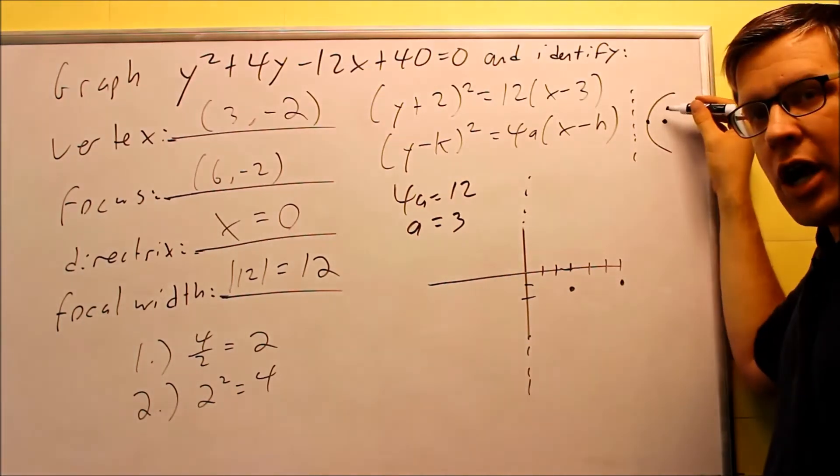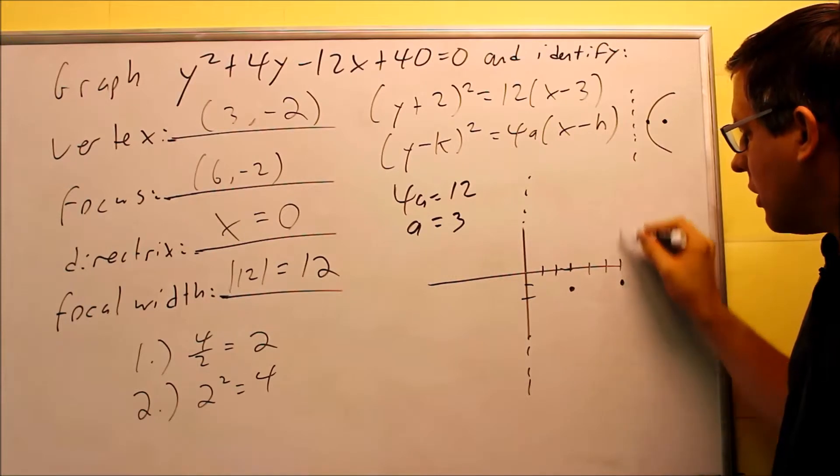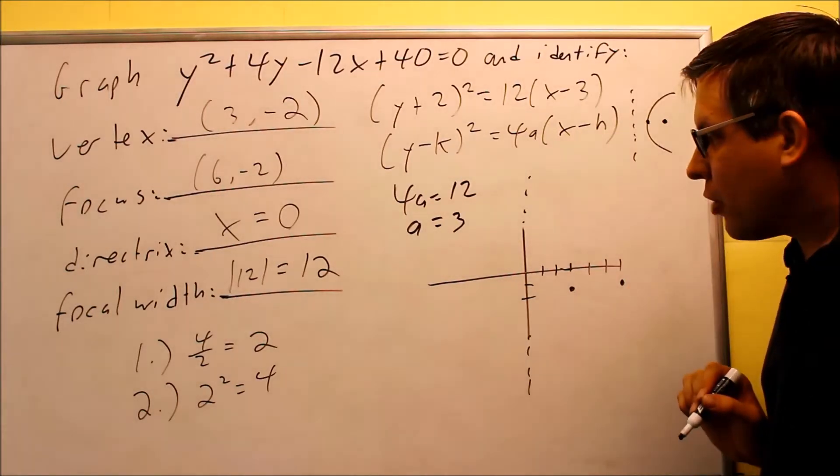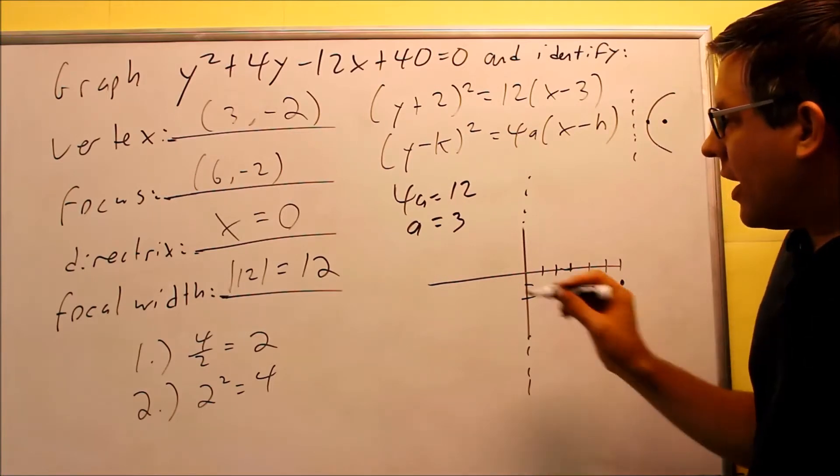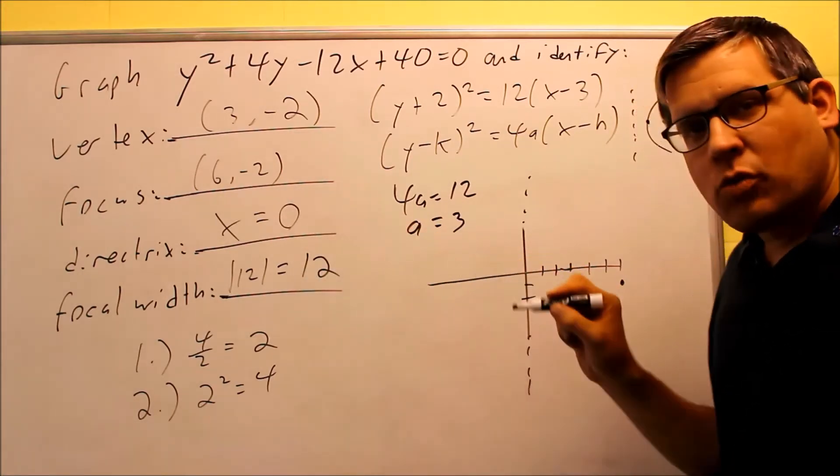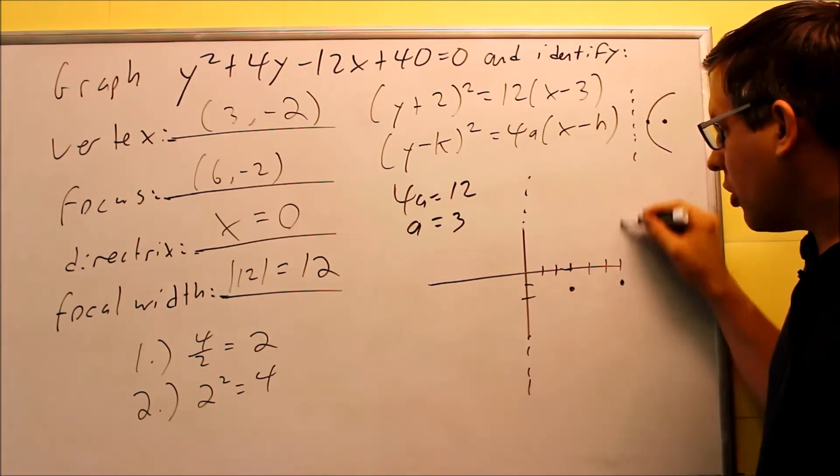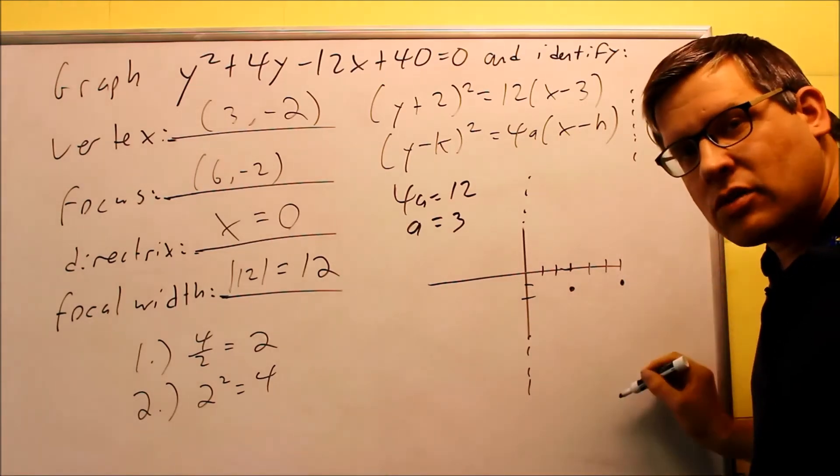The last thing I need to do is draw the graph. So again, at the focus, I need to find 2 points here so that way I know how wide the parabola actually is. My focal width was 12. If I divide that by 2, I get 6 in each direction. So from here, I'm going to go up 6, make a dot, and then down 6, make a dot.